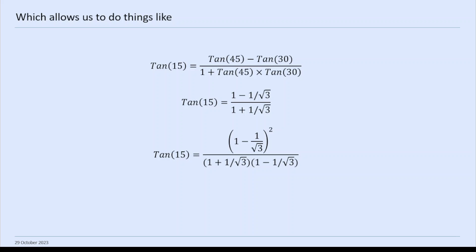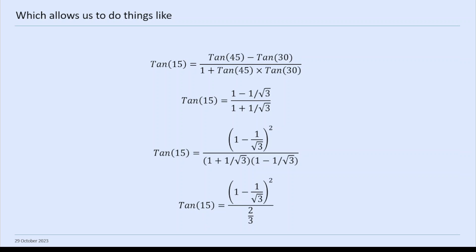What we do here is multiply top and bottom by 1 minus 1 over root 3. So the top is 1 minus 1 over root 3 squared. The bottom is 1 plus 1 over root 3 times 1 minus 1 over root 3. So this is kind of a difference of two squares thing, so what it gives us on the bottom is 2 over 3, because it's 1 minus 1 over root 3 squared, which is 1 minus 1 third, which is 2 thirds.